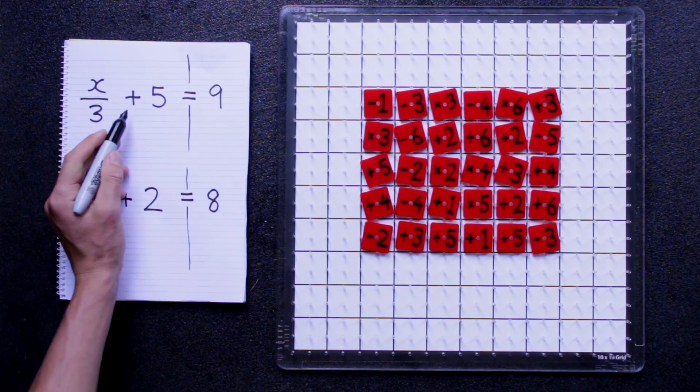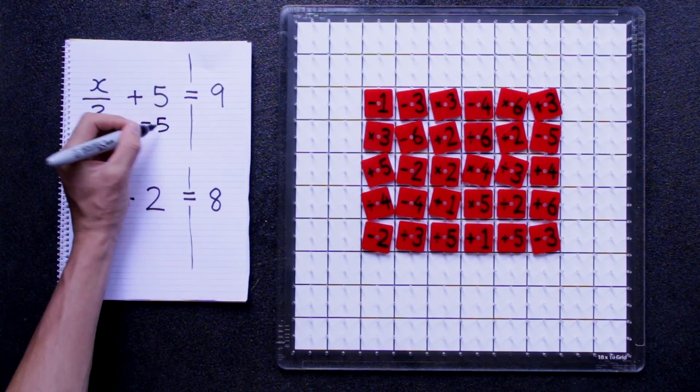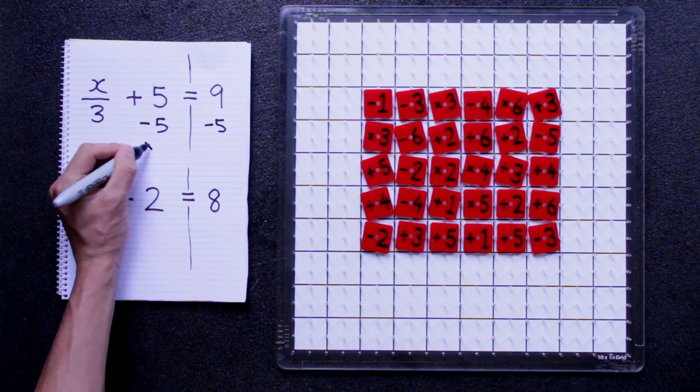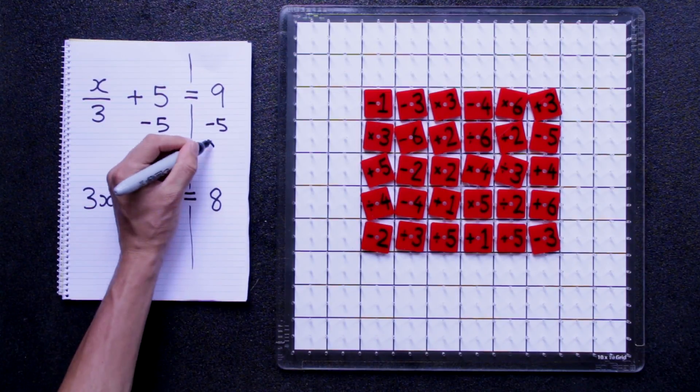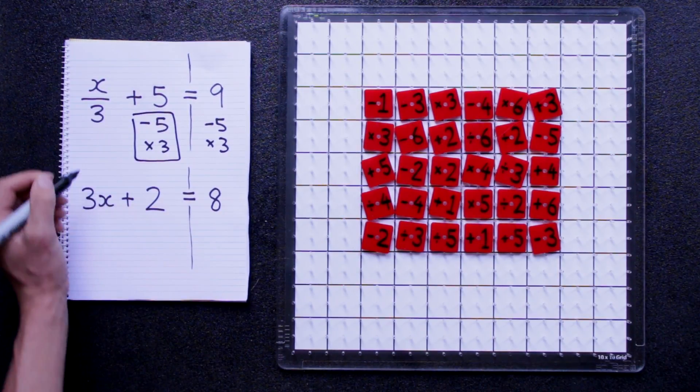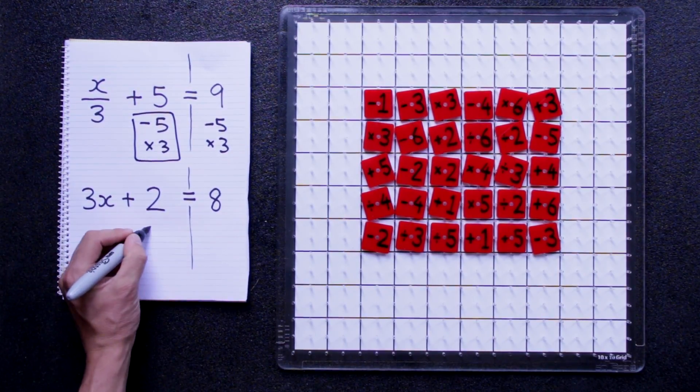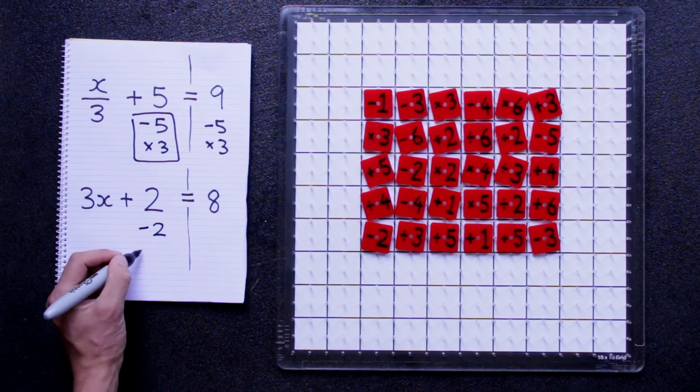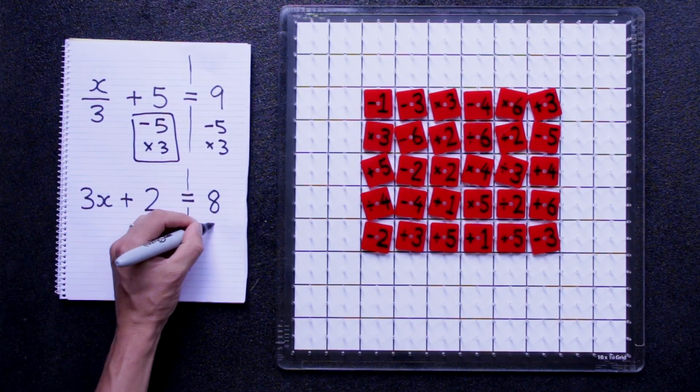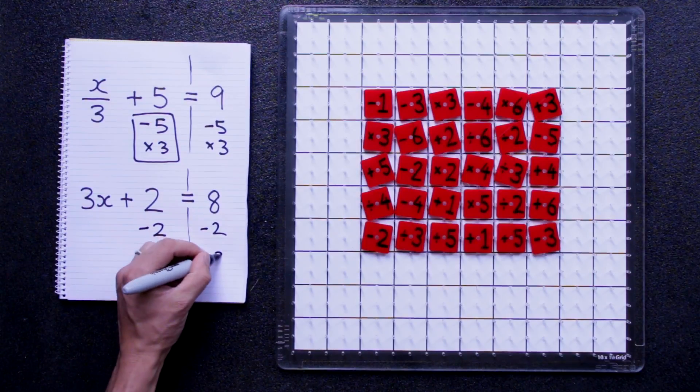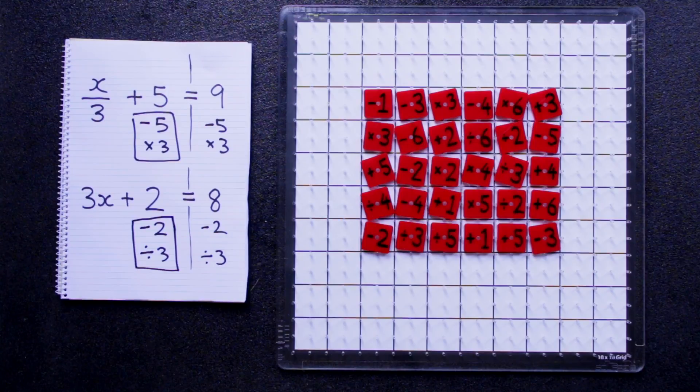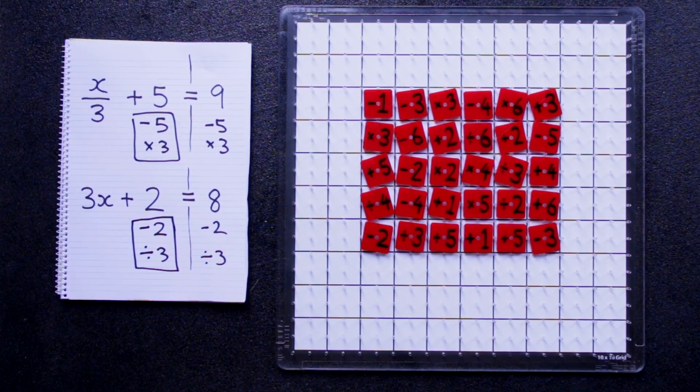So this player would need to subtract 5 from both sides and also multiply by 3. That would help them solve their equation. I'll just put a square around these ones. This player would need to subtract 2 and divide by 3 to both sides to solve their equation. And again, a rectangle around to show the actions.